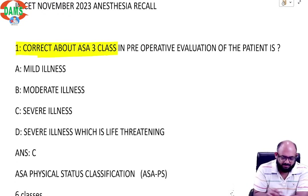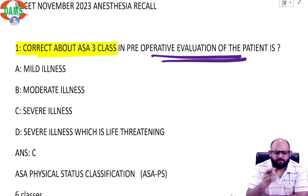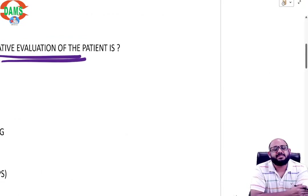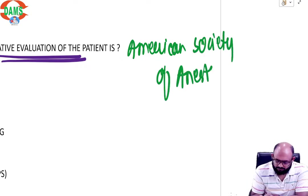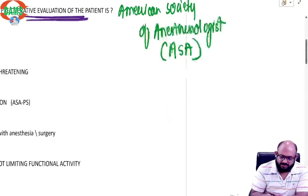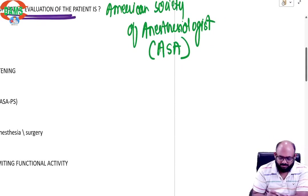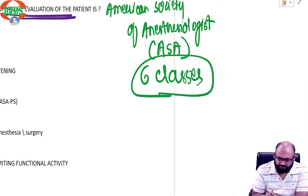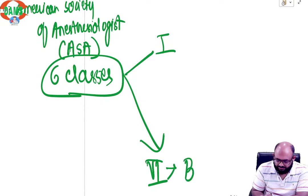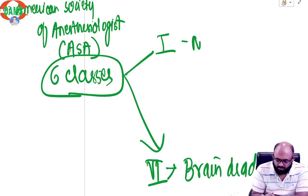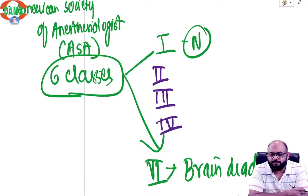First question: correct about ASA-3 class in preoperative evaluation of the patient. I don't even need to tell you this thing. We have discussed many times that ASA is American Society of Anesthesiologists. ASA is for assessing perioperative risk. It has six classes from one to six. Six is a brain dead patient and one is a normal.